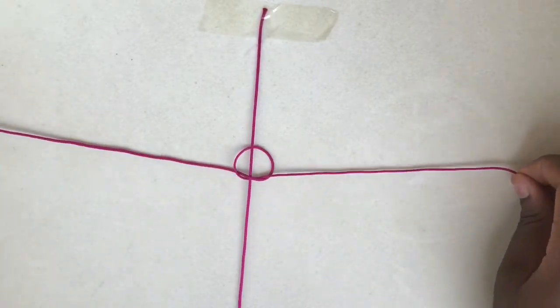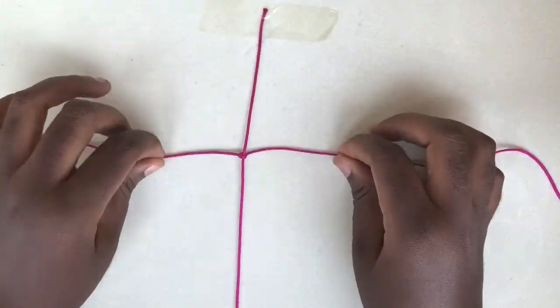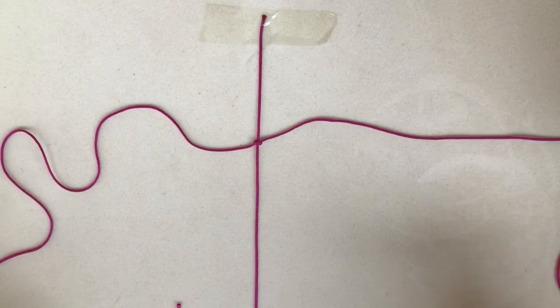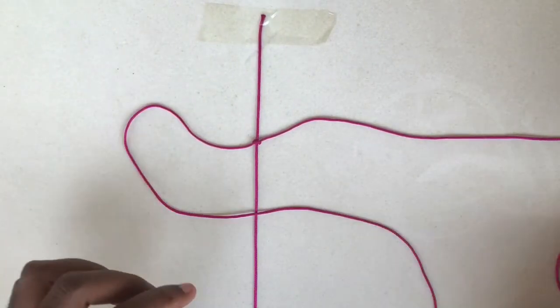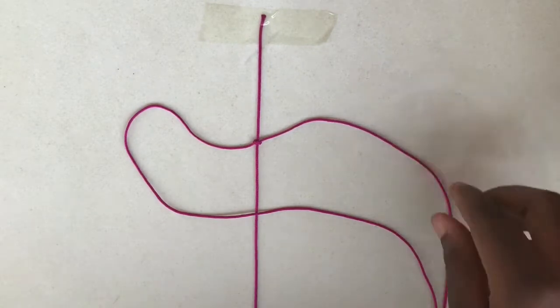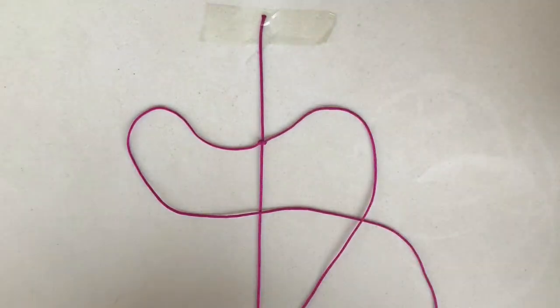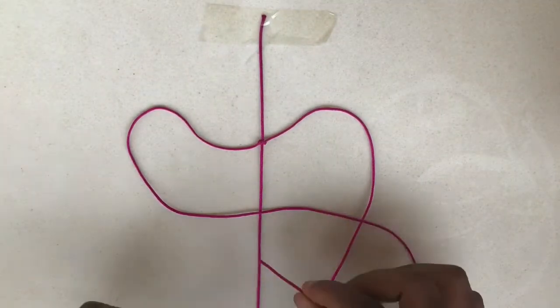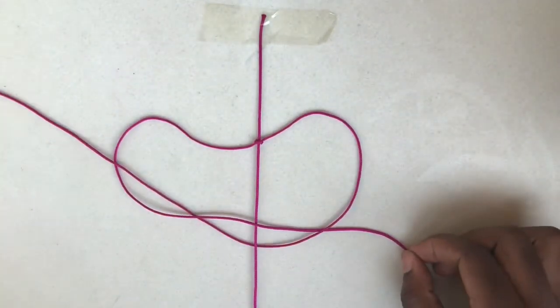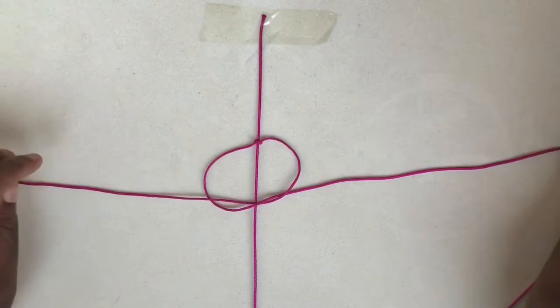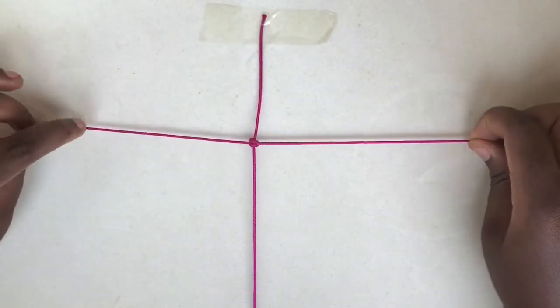Now we are going to start from the left side. Take the left one over the middle one, then take the right one over the left one, under the middle one, and through the loop that has been created at the left side. Pull each side to make the second knot.